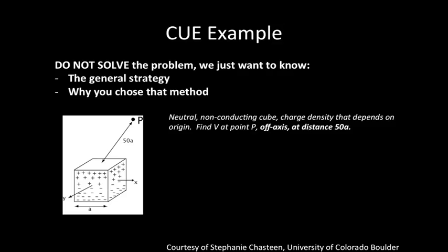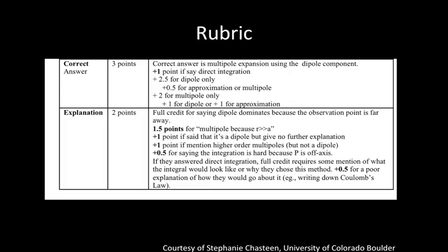What we did is we came up with a really detailed rubric for assigning points to each problem. Here is the rubric for this particular problem. You can see we broke it out into whether they gave the correct answer and what kind of explanation they gave, and we have specific points for different types of answers that they might give. We argued amongst ourselves as to how many points each type of answer was, and we came up with something that worked really well.